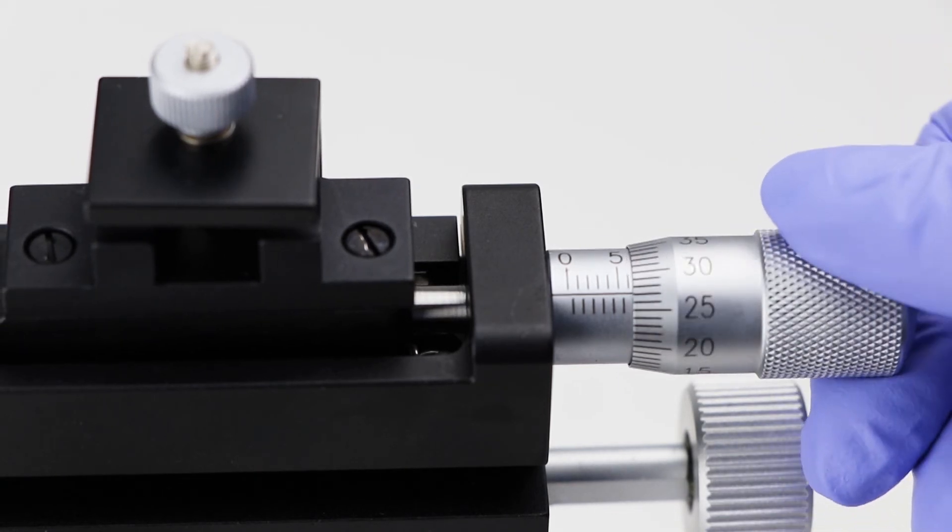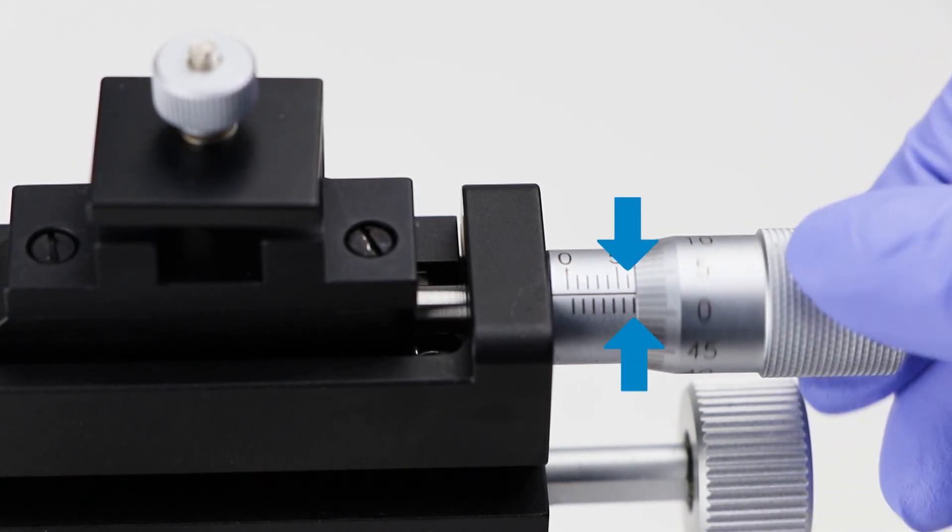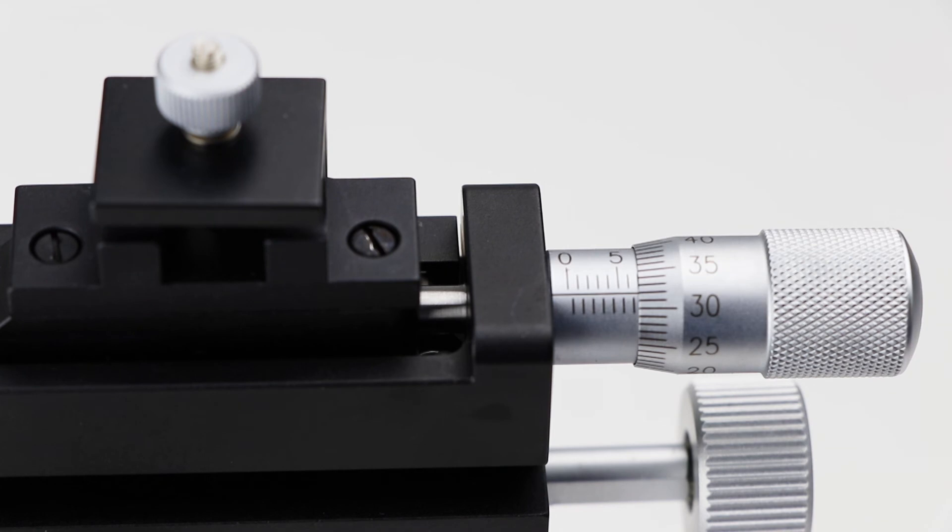This time, 6.5 is visible on the linear scale. On the rotational scale, you can read 32, which is equivalent to 32 hundredths of a millimeter. Add these two values together to get your measurement. 6.5 plus 0.32 equals 6.82 millimeters.